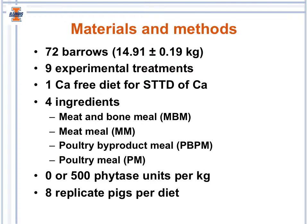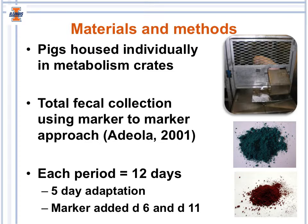To answer our objective, we used 72 barrows with an initial body weight of 14.91 kilograms. There were nine experimental treatments. The first treatment was a calcium-free diet used to estimate the standardized total tract digestibility of calcium. We then had four ingredients — meat and bone meal, meat meal, poultry byproduct meal, and poultry meal — either in the absence of phytase or with the addition of 500 units of microbial phytase. Each experimental diet was fed to eight replicate pigs. Pigs were individually housed in metabolism crates, and total feces were collected using the marker-to-marker approach. Each period lasted 12 days, with the first five days serving as the adaptation period.